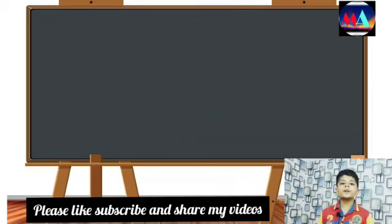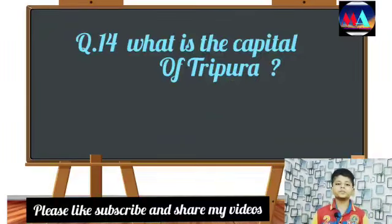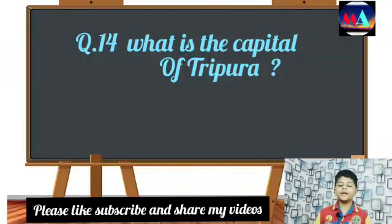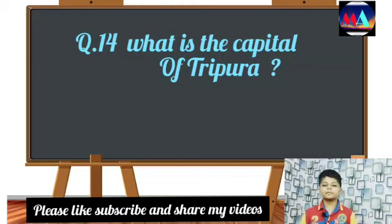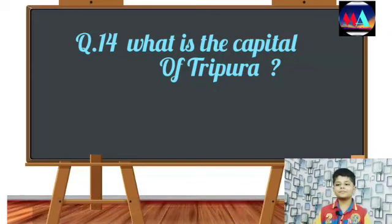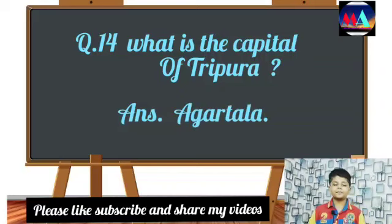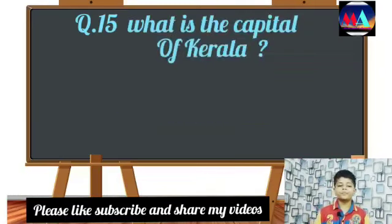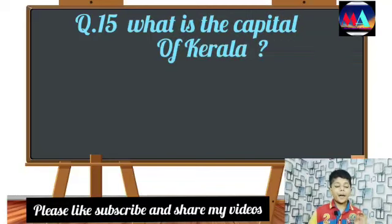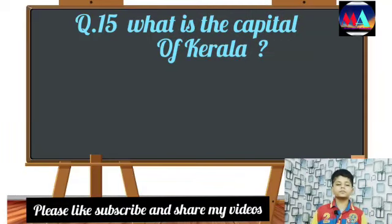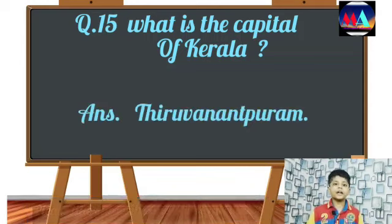Question number fourteen: What is the capital of Tripura? Answer: Agartala. Question number fifteen: What is the capital of Kerala? Answer: Thiruvananthapuram.